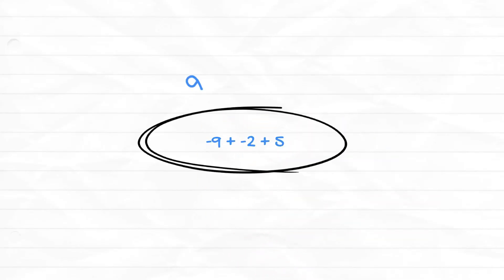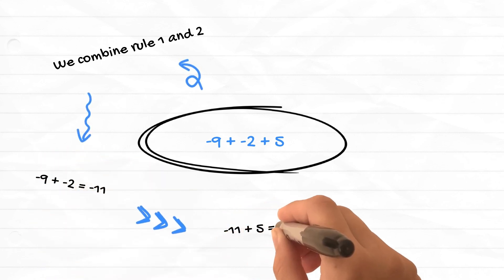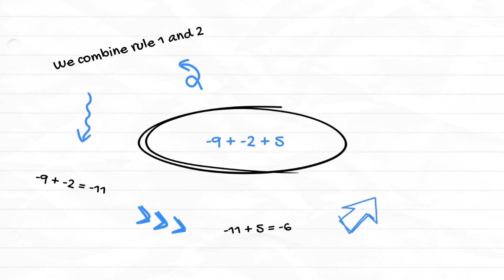Let's have a look at this question. Negative 9 add negative 2 add 5. We add the two negatives to get negative 11 and then add 5 to get negative 6.